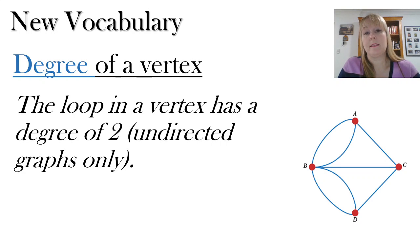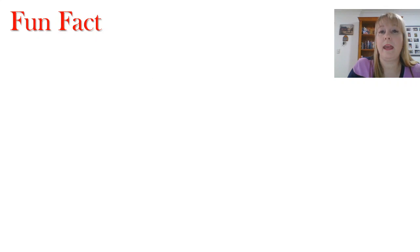Now a loop in a vertex has a degree of two, and this only works for your undirected graph. So in this case, the degree of B, well, it's got two going out to point A and two going out to point D. So it has a degree of four altogether. So this is something to be aware of. Those loops are two out and back again.